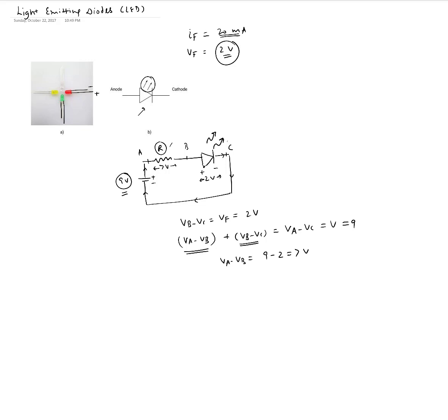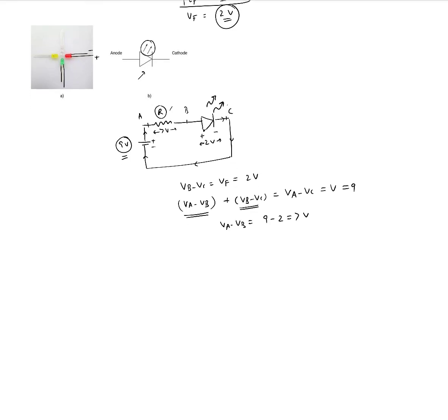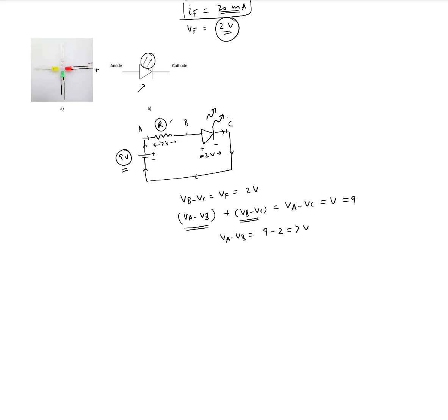We also want to make sure that current is limited to 20 milliamp. If we want the current to be only 20 milliamp in this circuit, then across the resistor we can apply Ohm's law, which says that VA minus VB should equal the current times the resistance. We want the current to be no more than 20 milliamps, so that's 20 times 10 to the minus 3 amp times the resistance. This is 7, so R would be equal to 7 over 2, which is 3.5 times 10 to the power 2, so that's basically 350 ohm. Resistance is 350 ohm.